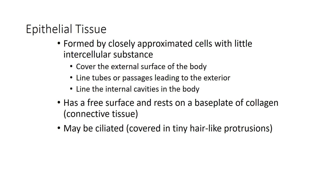Epithelial tissue may be ciliated — a special term, and in anatomy we have a lot of special terms for things. Ciliated epithelium is epithelium that has tiny hair-like structures on it, like the outside of your skin that has hair on it, or in the lungs where cilia help move foreign materials up out of your lungs toward your mouth so that you can clear the lungs and cough them out.